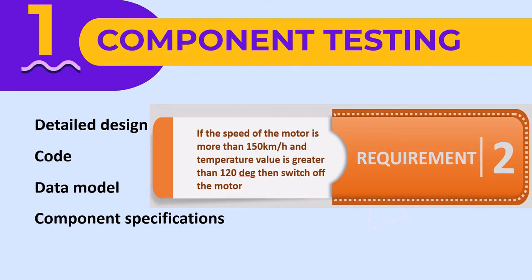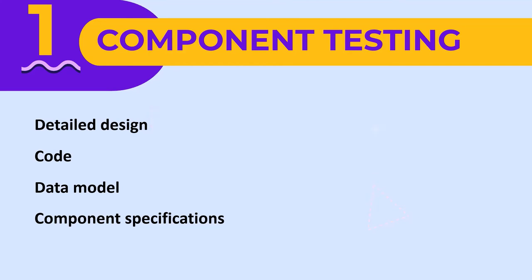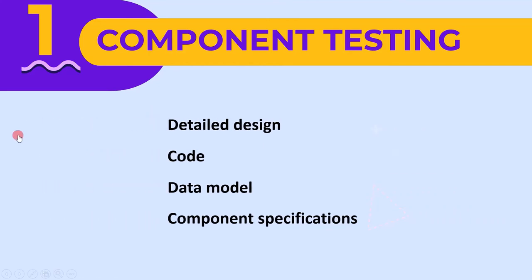If the tester knows how the component is implemented, it will help them write robust component testing test cases. You need to remember the four test bases of component testing: detailed design, code, data model, and component specification.